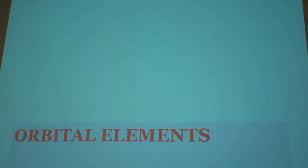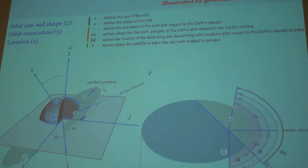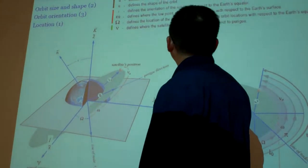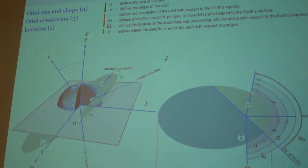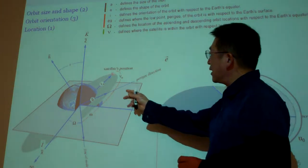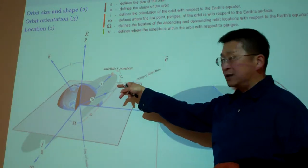Here first I highlight how many orbital elements we have. We have six, and six at most, nothing more, nothing less. We can uniquely define the location of a satellite in space.